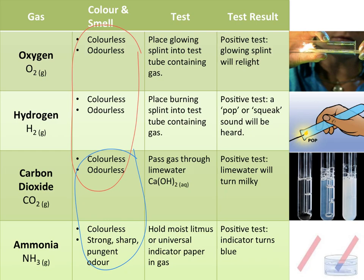A better test for carbon dioxide is actually passing this gas through something called lime water, or calcium hydroxide. This is clear calcium hydroxide, and as we pass carbon dioxide through it, it becomes more milky. A positive test is the lime water turning milky.